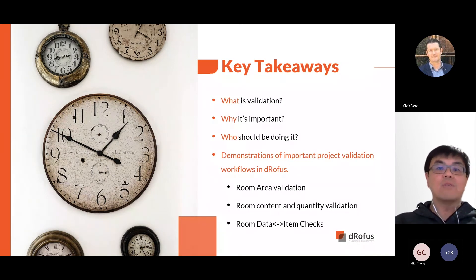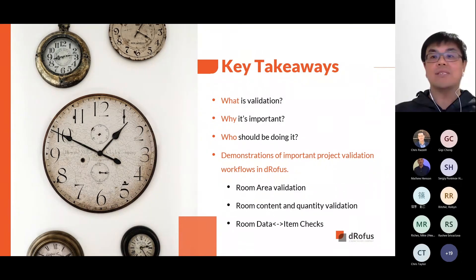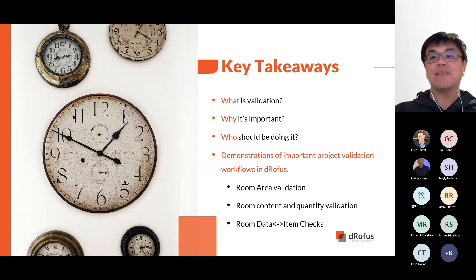We will also be demonstrating three types of validations. The first being validating the brief area and the designed area. The second is checking the room content and quantity between design and briefed. Lastly, validating design provision meets the requirements using room data fields and items data fields.